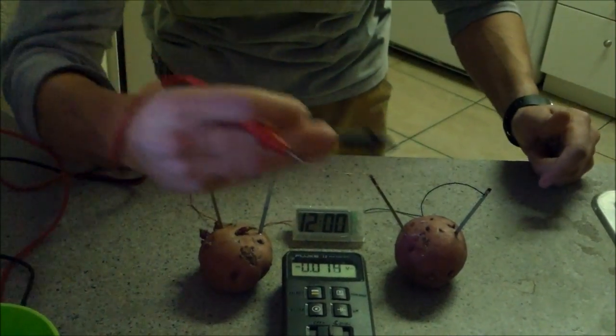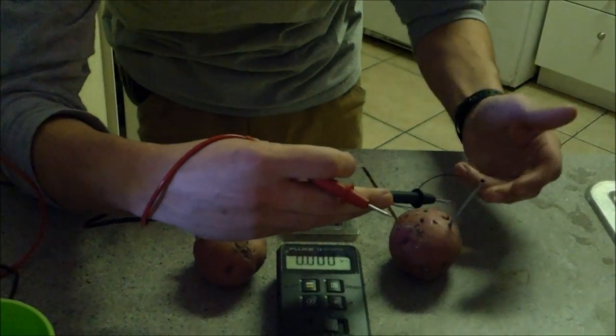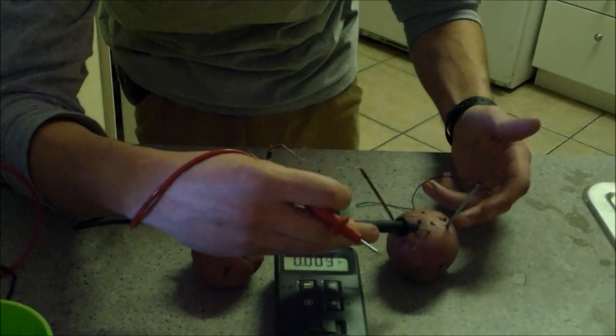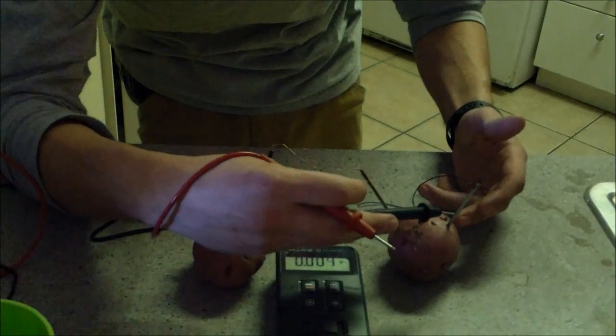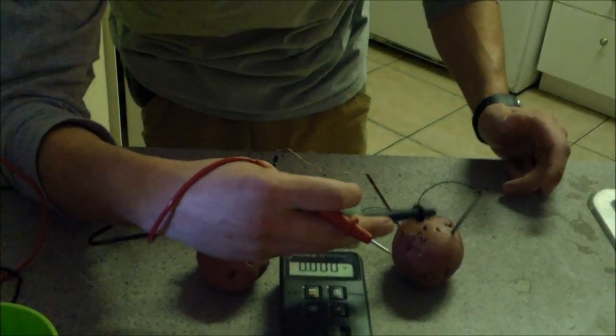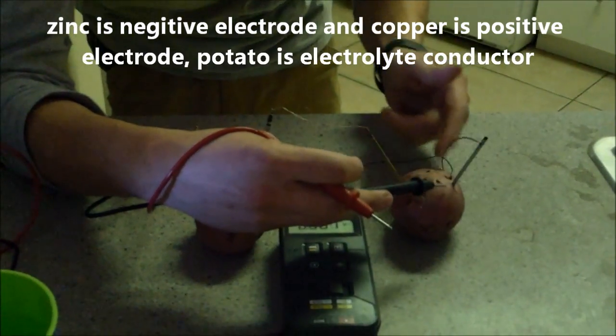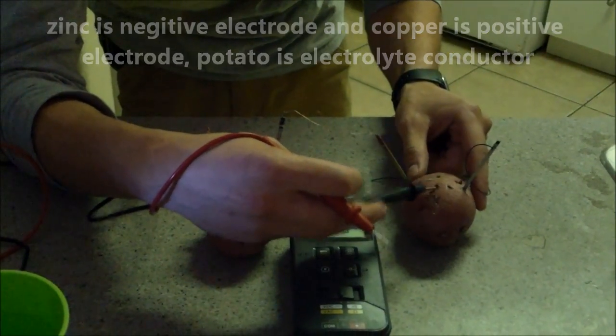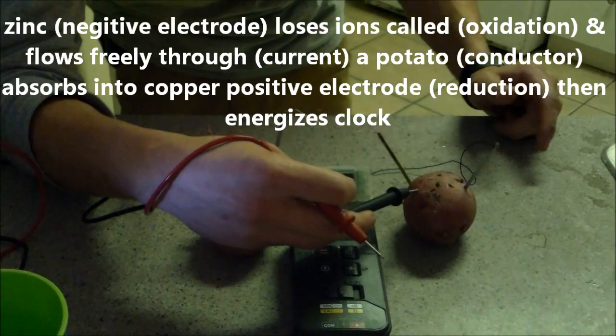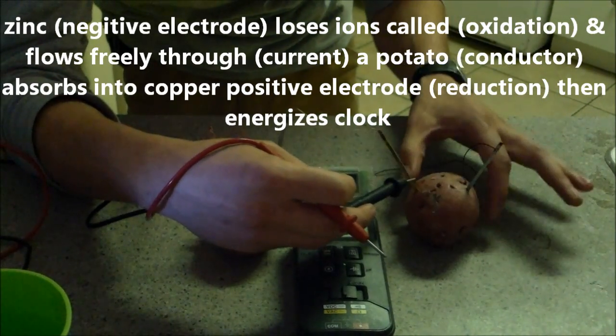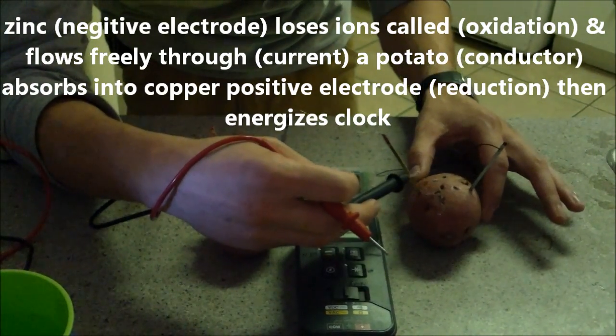Alright, that's how it works. The zinc is the negative, and so what the potato does is causes the zinc oxidation on the zinc lead right here. And the ions conduct through freely in the potato into the copper lead, which is the positive, and that's reduction.